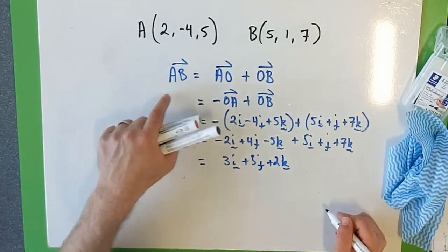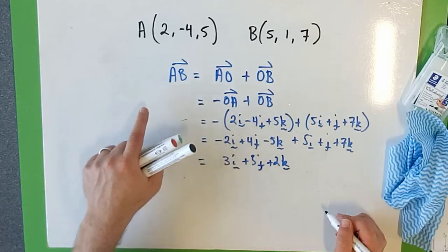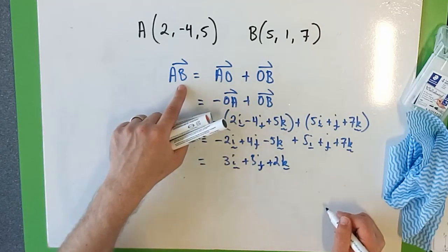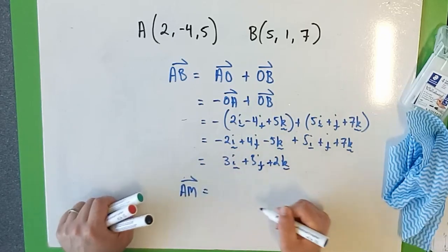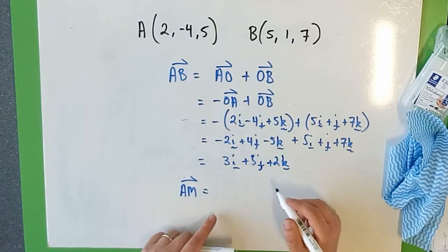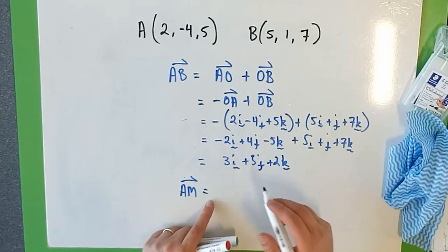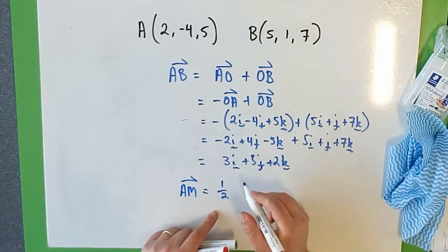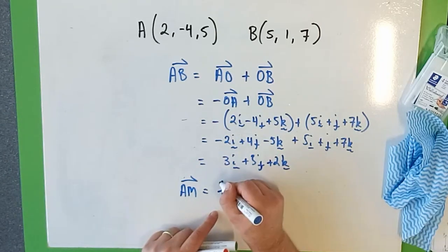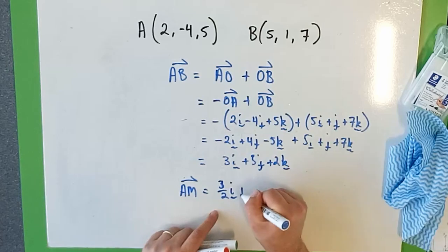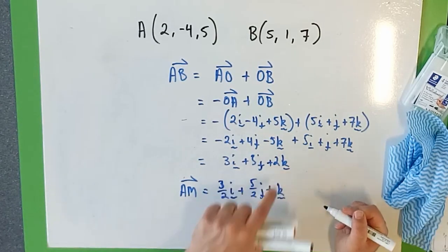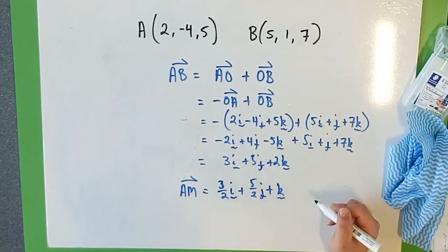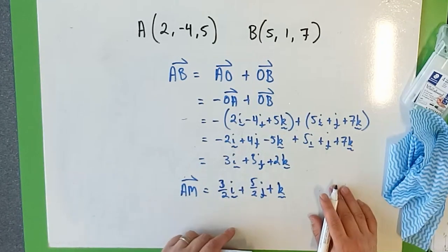So the halfway point between A and B is, we'll call the midpoint M, so A to M. A to M is just going to be halfway from A to B, so the halfway point is half of 3i, so plus 5 over 2j, plus k. 2 divided by 2 is just 1, so divide it all by 2, so that's A to M.